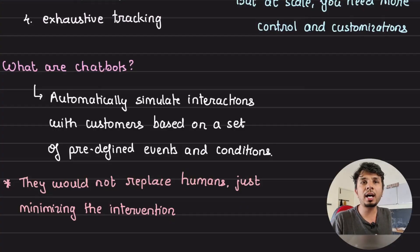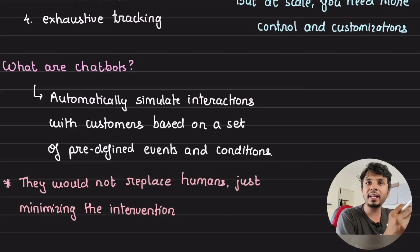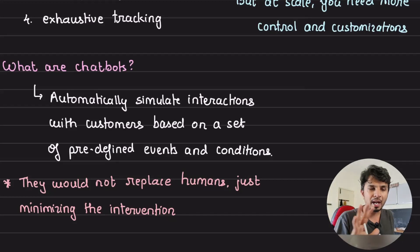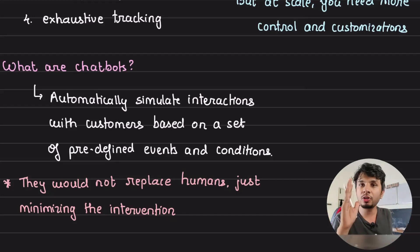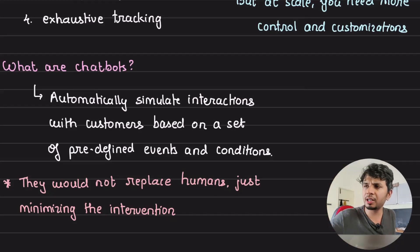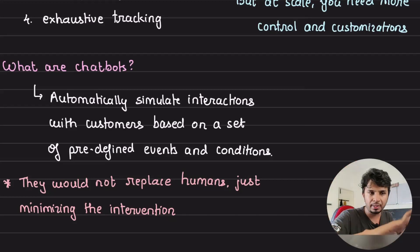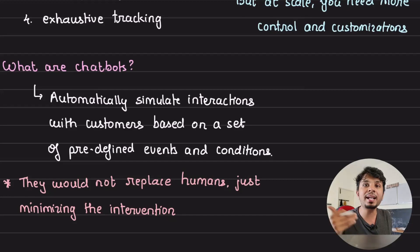What are chatbots? Chatbots are computer programs that automatically simulate interactions with customers based on predefined events and conditions. Primarily, if you are unhappy with an order, you go to the support screen, where you are taken on a journey requiring almost zero human intervention — navigating through questions like: was your order spilled, what happened, what do you want to do. You are taken on the same journey you would have had while on a call with a customer service representative.